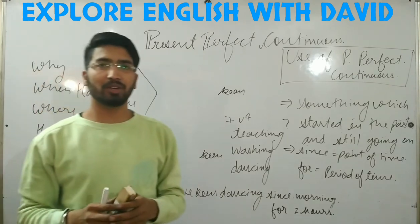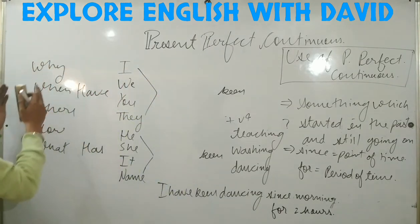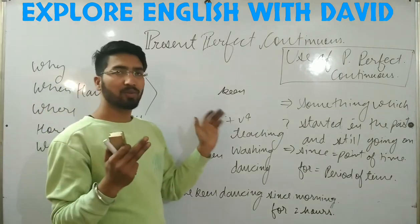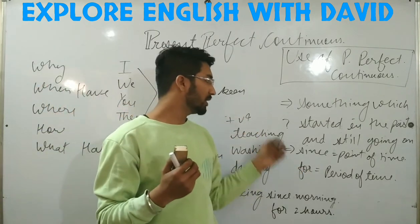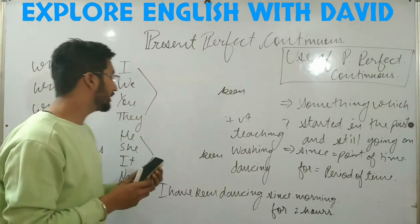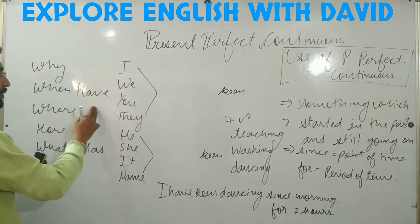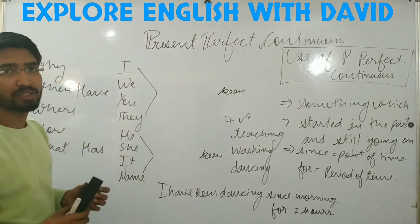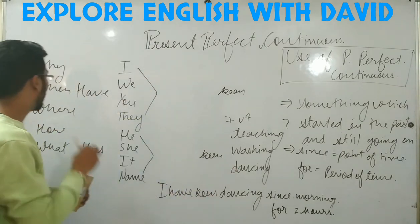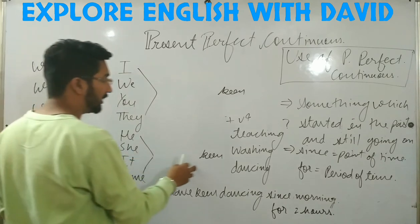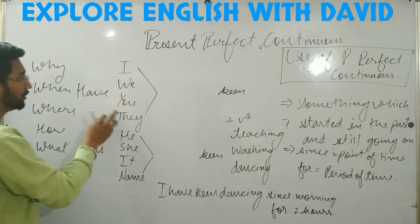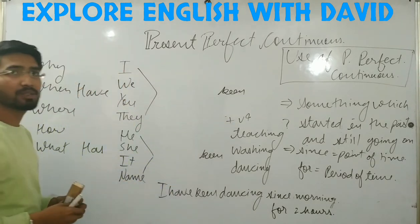We can also make sentences with WH-question words. We just have to put the WH word first — why, when, where, how, what — then the helping verb, then the subject, then 'been', then the fourth form of the verb, and don't forget to add 'since' or 'for'. For example: How has she been dancing since morning? Where has she been dancing since morning? Why have you been watching TV since morning?